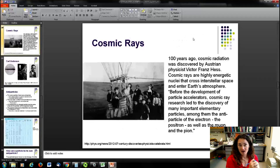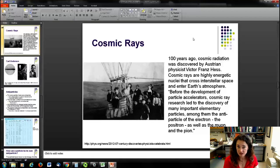So, the idea of particles and antiparticles came out of the mind of Dirac from this relativistic Schrodinger equation type thing. Now, how was this all experimentally verified? Well, to begin with that, we have to start with cosmic rays. So, about a hundred years ago, cosmic radiation was discovered by Austrian physicist Victor Franz Hess. Cosmic rays are highly energetic nuclei that cross interstellar space and enter our atmosphere. Before the development of particle accelerators, cosmic ray research led to the discovery of many important elementary particles. Among them, of course, the antiparticle of the electron and the positron, as well as the muon and the pion. So, Hess did his experiments in these balloons. He won the Nobel Prize in 1936.